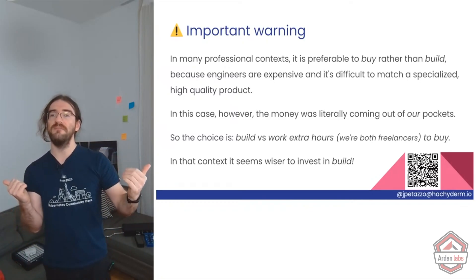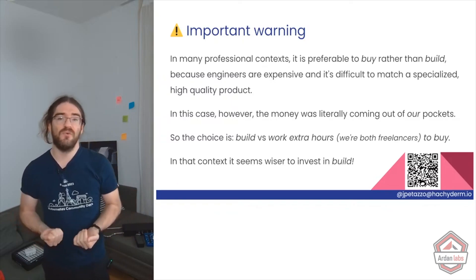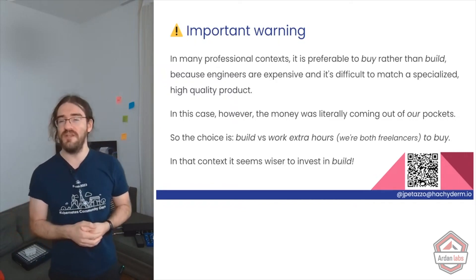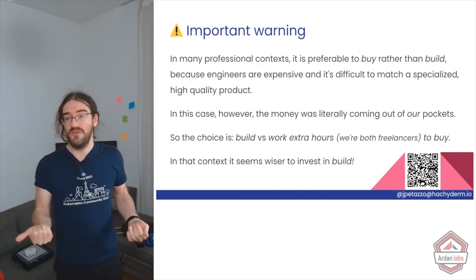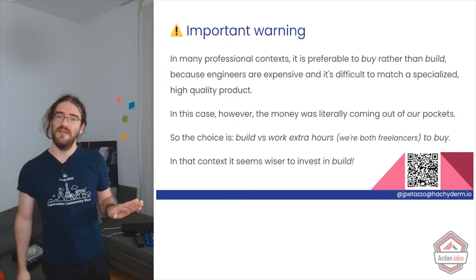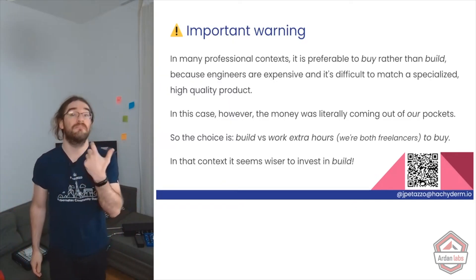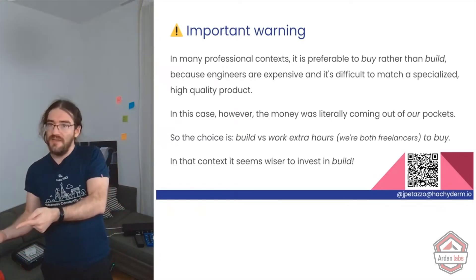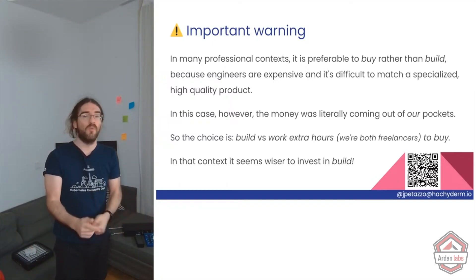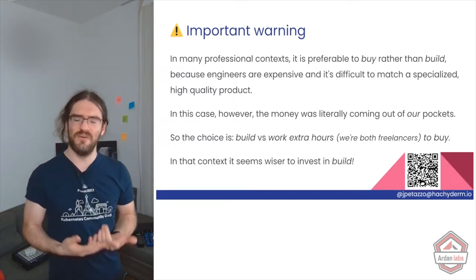Even with great engineers it's hard to match a really good product — Heroku Postgres is awesome and building something equivalent as a small team is almost impossible. But in this case it was literally our own money paying for everything. So it wasn't really build versus buy — it was build, or work extra hours to pay the bills. If we're paying a grand a month and build something that costs 100, we're saving 900 a month.